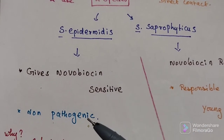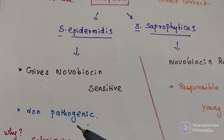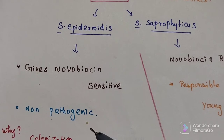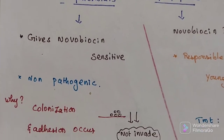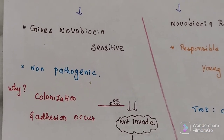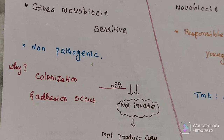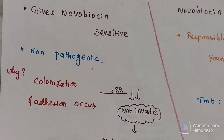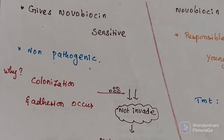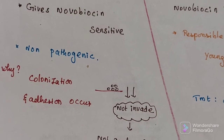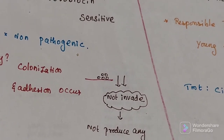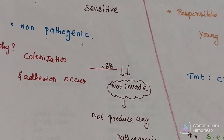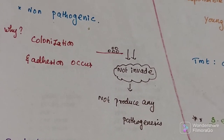Staphylococcus epidermidis is basically a non-pathogenic organism. It is non-pathogenic because colonization and adhesion occur, but it does not invade. That is why it does not produce any pathogenesis.